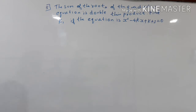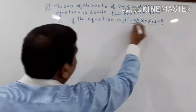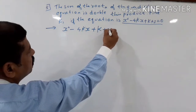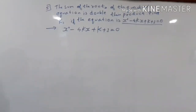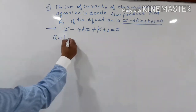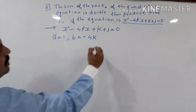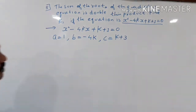The equation is x squared minus 4kx plus k plus 3 equals 0. Compare with standard form. A is equal to 1, B is equal to minus 4k, C is equal to k plus 3.